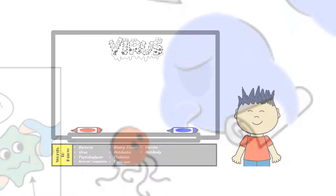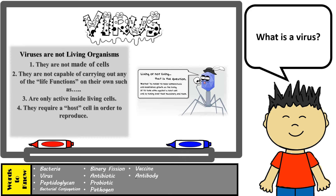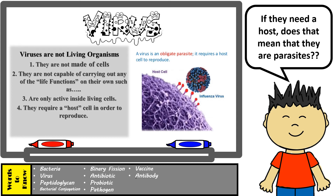Viruses are infectious structures that are not living because they lack certain living characteristics, such as the ability to grow or metabolize — they don't need food or energy. They can only reproduce by using the host cell's machinery, and they are non-cellular, meaning they're not made up of cells — no nucleus, no organelles. Viruses are considered to be parasitic, which means that all viruses require a host. A parasite lives in or on other living organisms causing them harm, and a virus is only active when living inside a living cell.